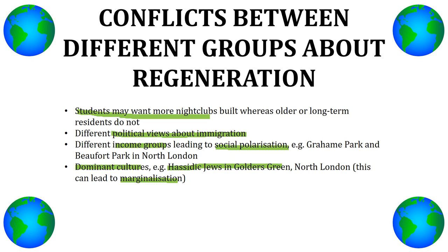An example of social polarization is Graham Park and Beaufort Park, two wards in North London just a few metres apart separated by a road. Graham Park is highly deprived with very low education, whereas Beaufort Park is the complete opposite — highly educated with very low deprivation. Those in Beaufort Park are on high incomes while Graham Park residents are on very low incomes. There is more regeneration in Beaufort Park, leaving Graham Park residents feeling very segregated.